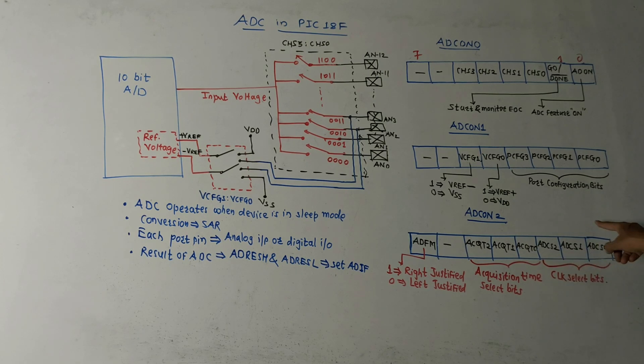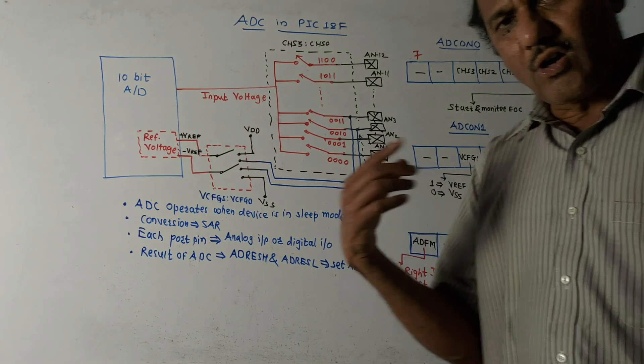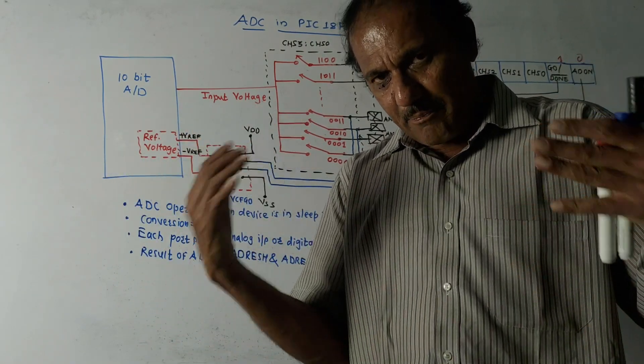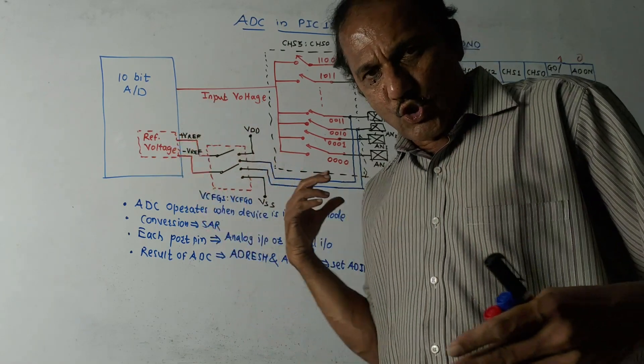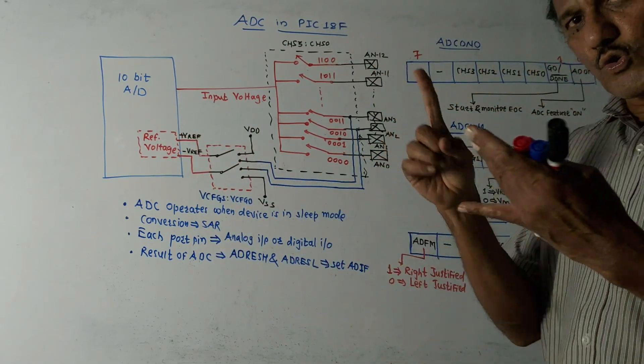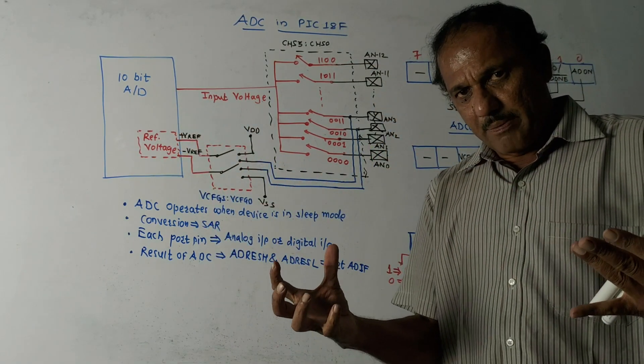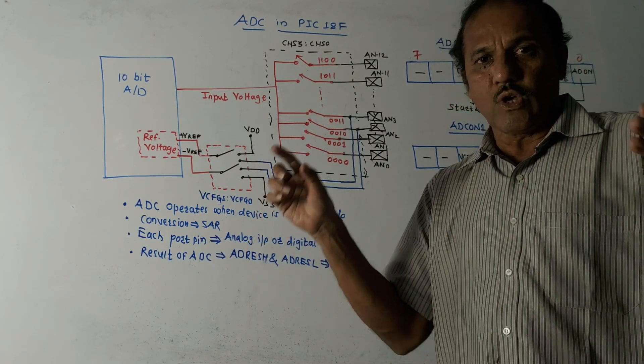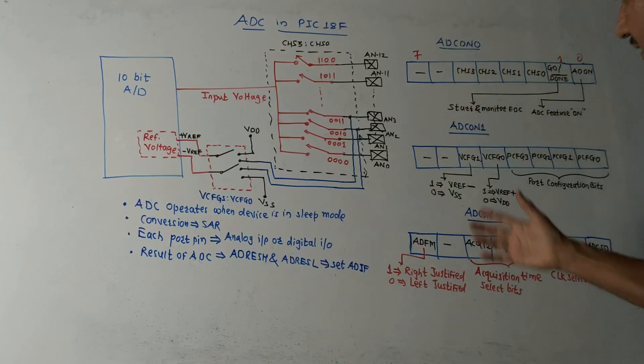The last three bits, that is bit number 0, 1, 2, ADCS2, ADCS1, and ADCS0, these are basically clock select bits. So the available clock frequency from the microcontroller is Fosc oscillator. So by choosing different configurations of the bit, you can choose the frequency as Fosc oscillator divided by 16 or Fosc oscillator by 32, Fosc oscillator by 64, and so on.